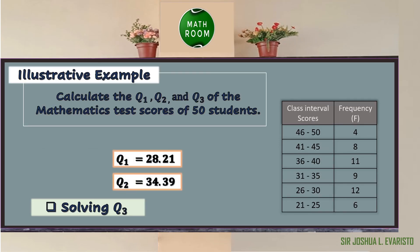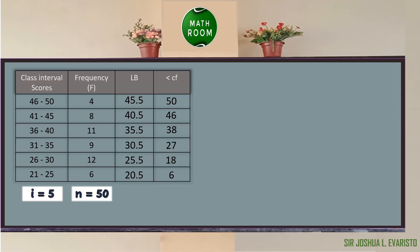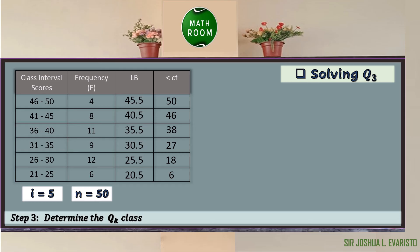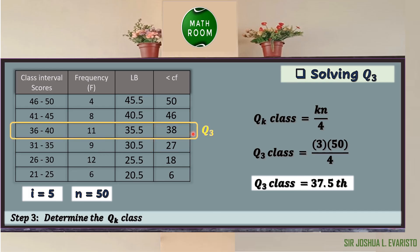After solving quartiles 1 and 2, let us proceed solving quartile 3, the upper quartile. Since we already have the lower boundaries and less-than cumulative frequency, we proceed to step 3: determine the Q sub 3 class. Using the formula Q sub k class = k × n ÷ 4, by substitution Q sub 3 class = 3 × 50 ÷ 4 = 37.5. Since 37.5 is between 27 and 38, we choose the higher value, which is 38. Hence, the Q sub 3 class is found in the 4th class.